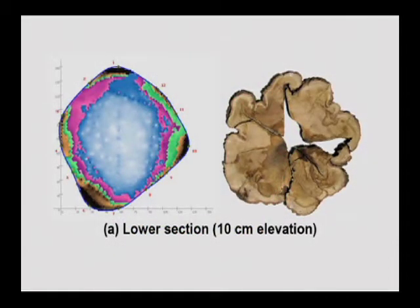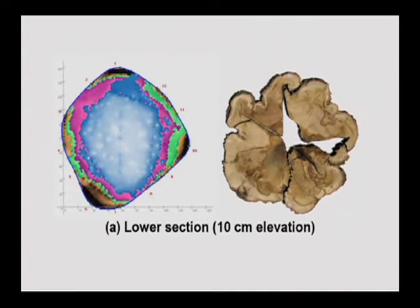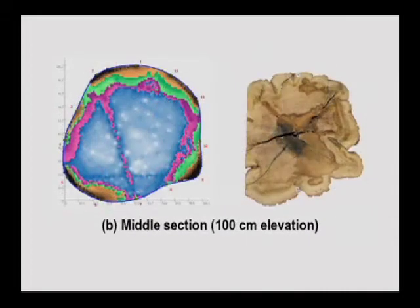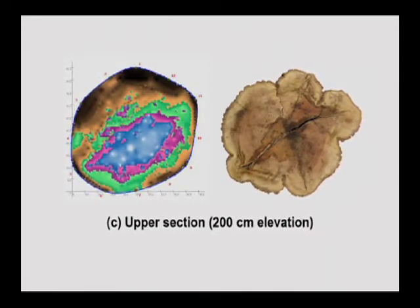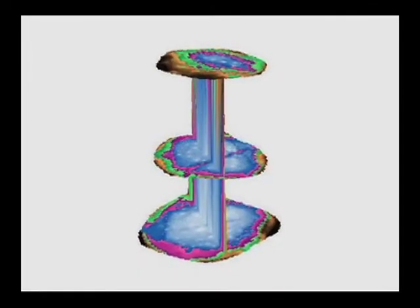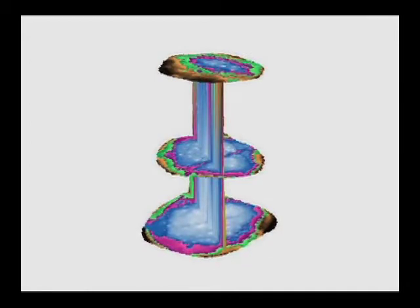In the case of this 100-year-old red oak, tests at cross-section elevations of 10 cm, 100 cm, and 200 cm indicated decay and defect most severe at the root collar level. Tomography software is able to combine the three tomograms, creating a 3D representation of the study area on the trunk.